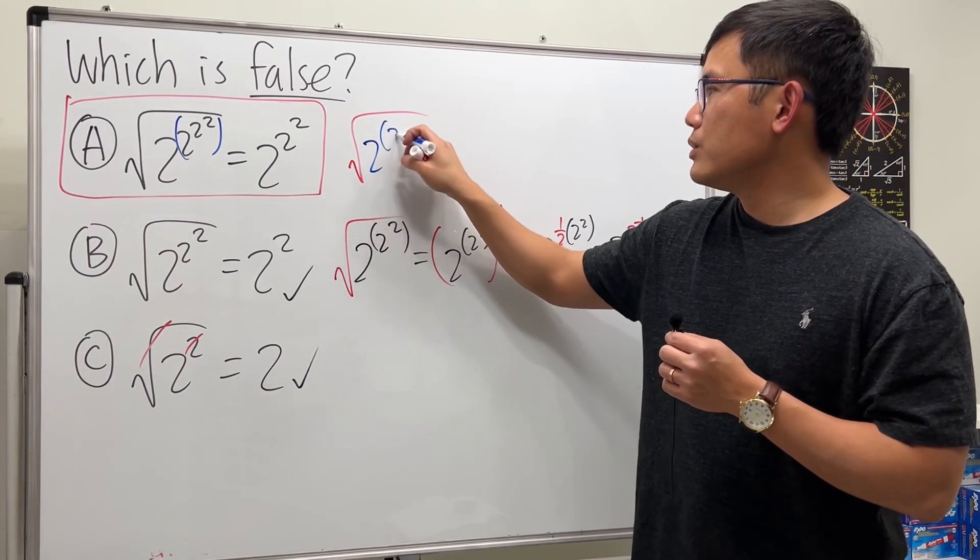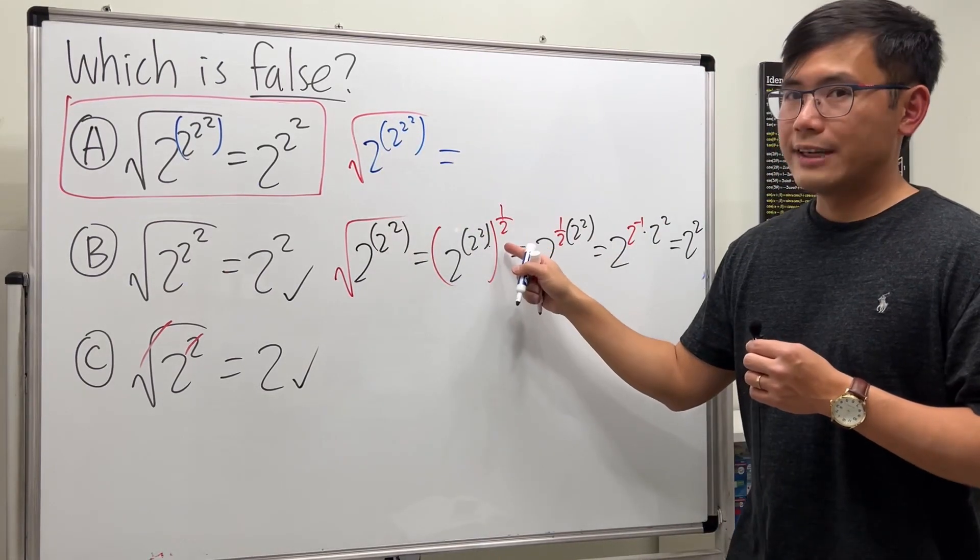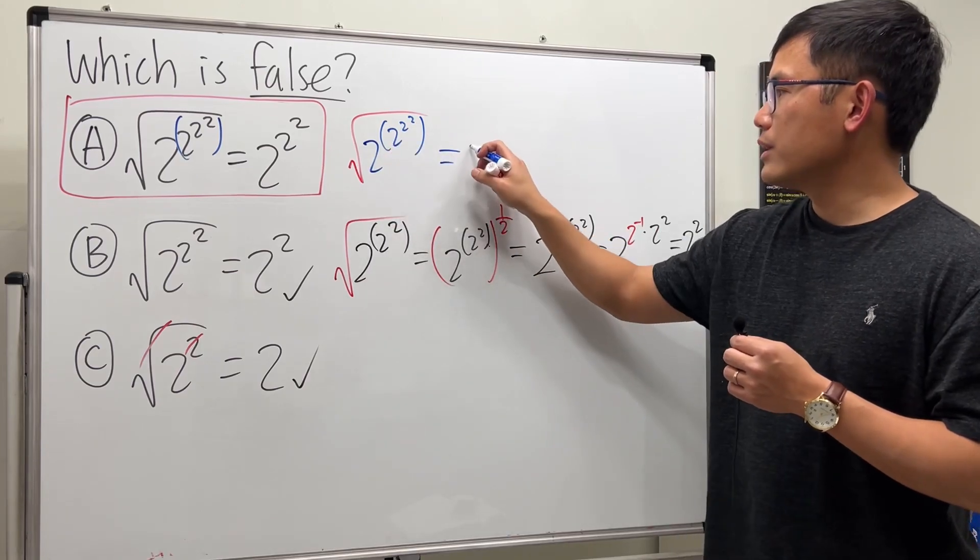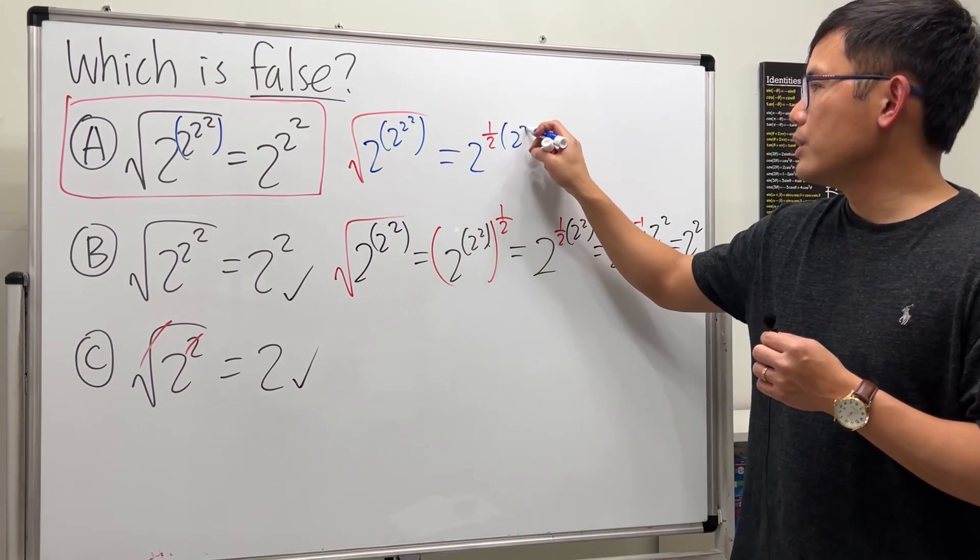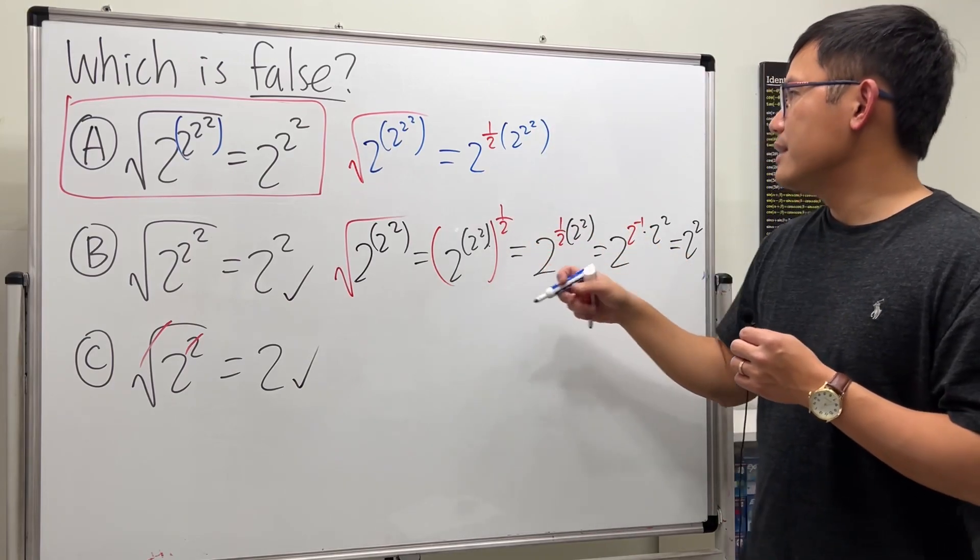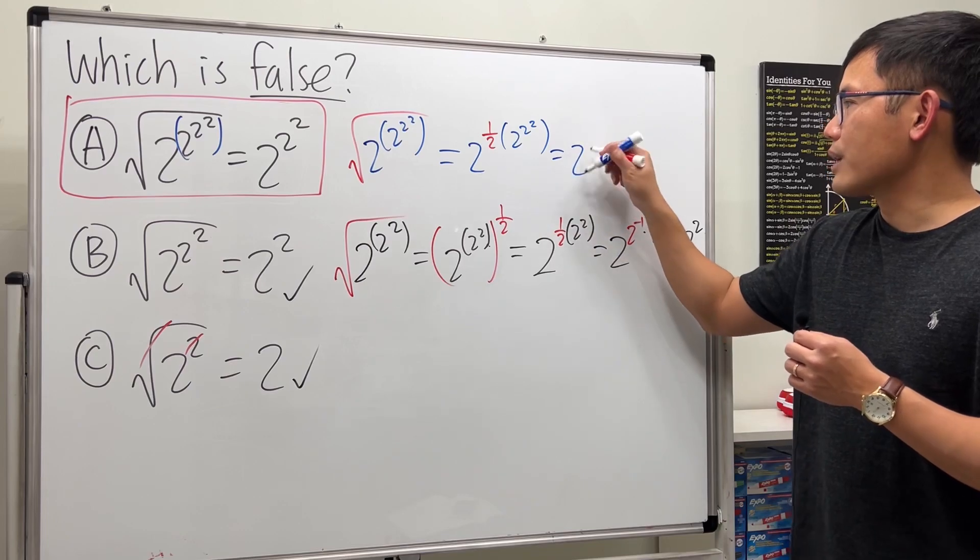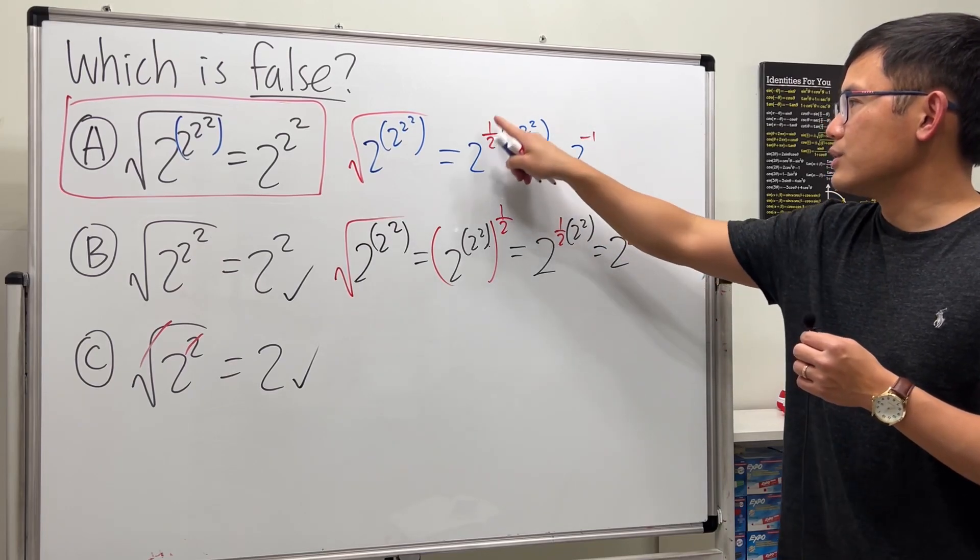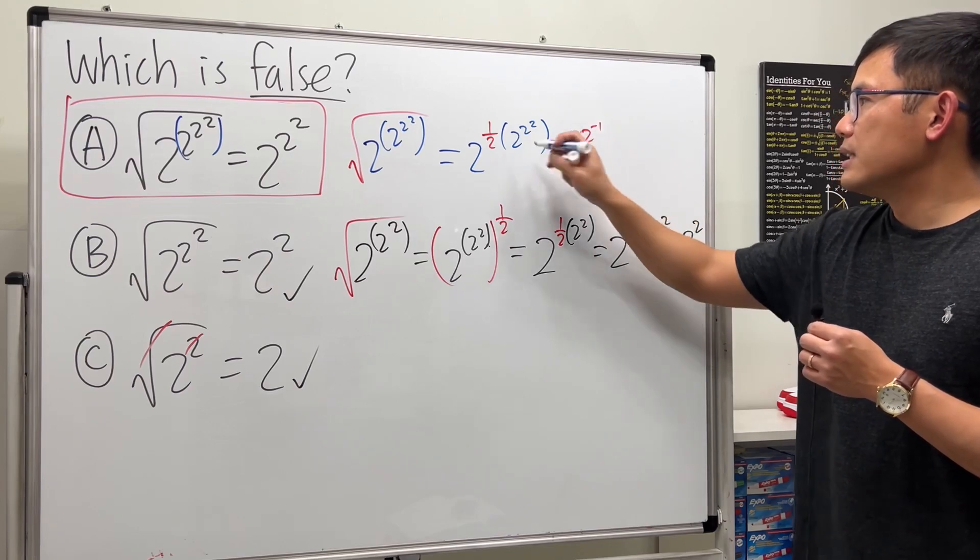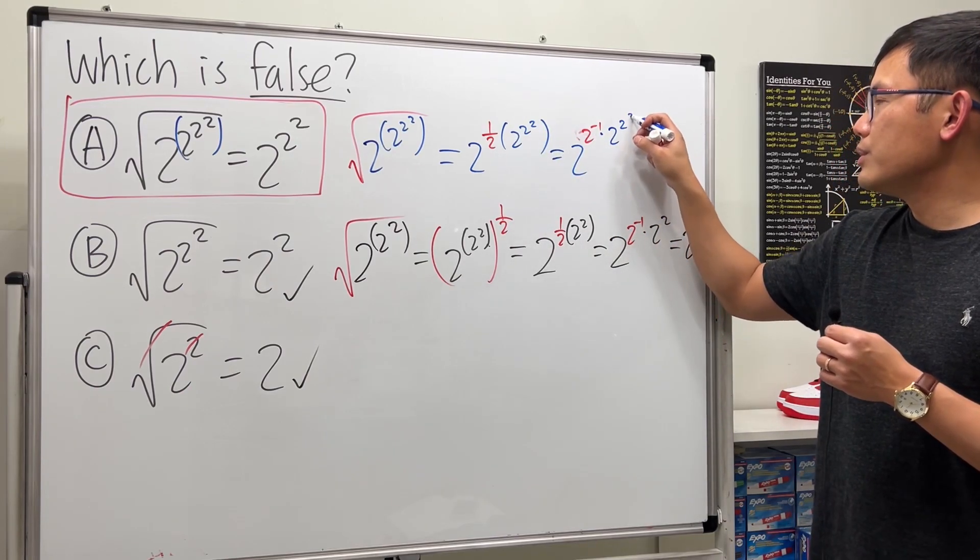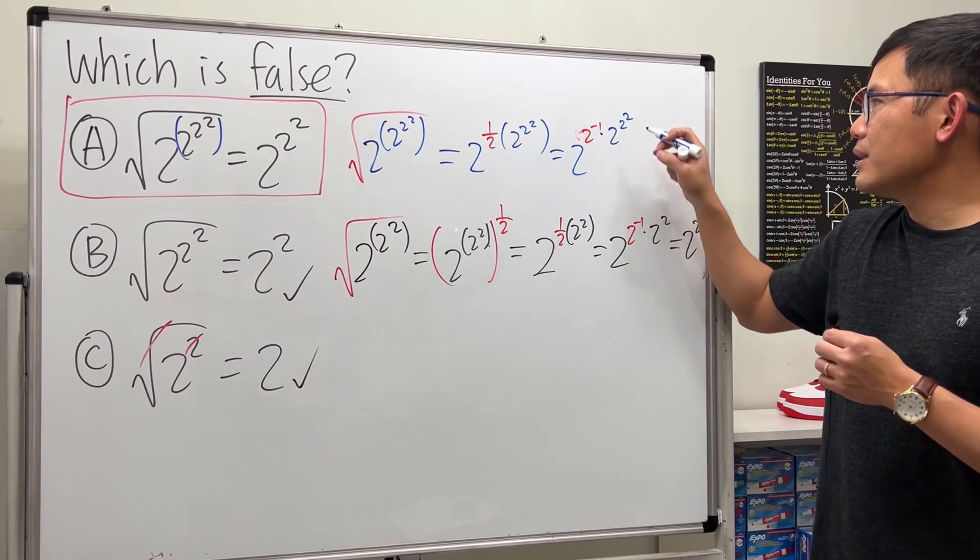Unfortunately, this doesn't really work out to anything nice. This is just 2^(-1/2) and this is 2^(2^2), so I'm not really sure how we can simplify. If you want, you can write it as 2^2 and then add the exponents, so it's 2^(2-1/2) which is 2^(3/2).